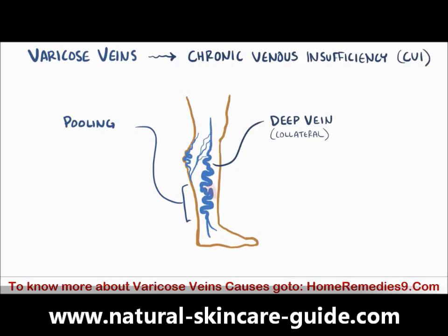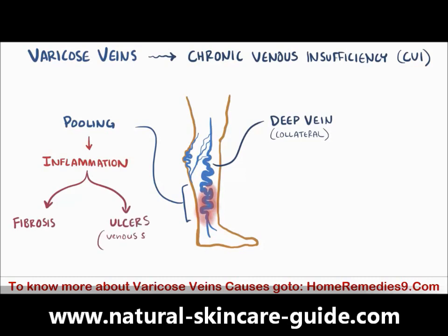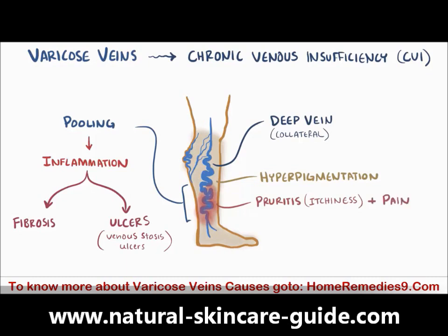With CVI, the stagnant blood in the lower extremities starts to cause an inflammatory reaction in the vessels and the surrounding tissue, which leads to fibrosis and potentially even ulcers, called venous stasis ulcers. Other symptoms of CVI include hyperpigmentation or darkening of the skin, as well as pruritus or itchiness, and pain. There can also be a lot of edema, as some of this fluid starts to leak out of the veins and into the surrounding tissues of the ankles and lower legs.